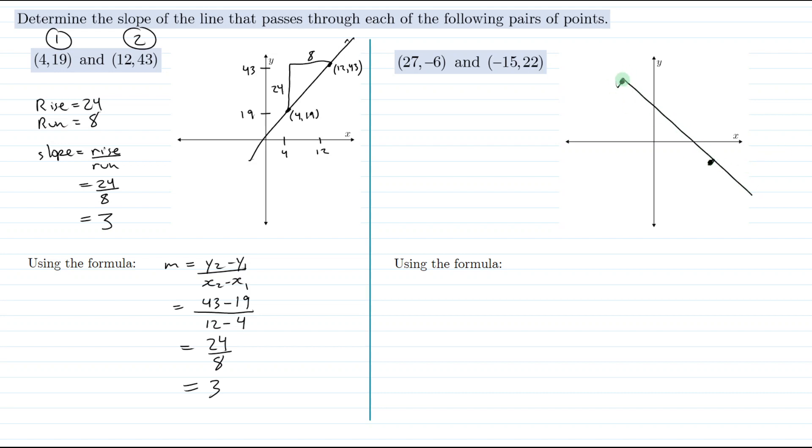So I'll draw that line that passes through those two points and label them. We have (-27,-6) and (-15,22).